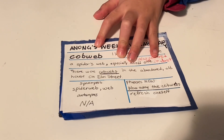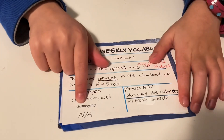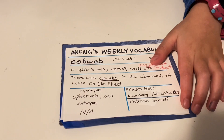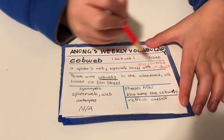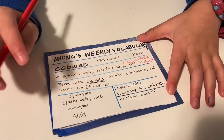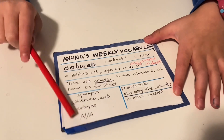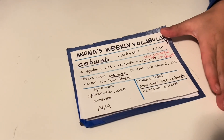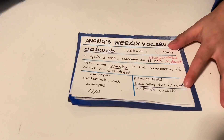If you notice, both synonyms share the suffix 'web.' There are no antonyms — I don't know if it's really because it's a noun, but it just doesn't have any antonyms.